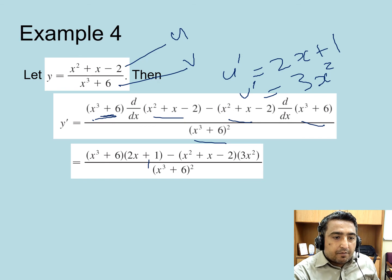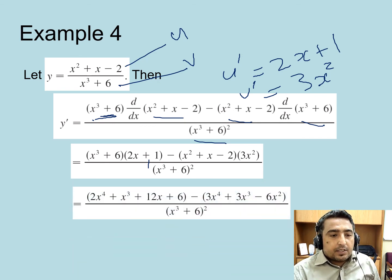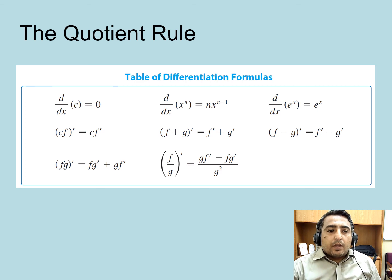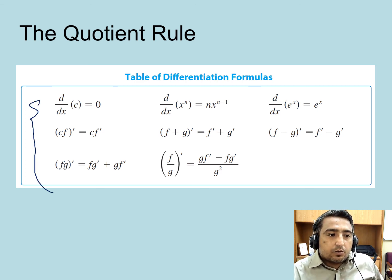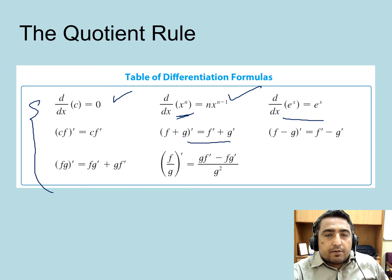After simplification, we end up with the final result. Till now, we have learned these formulas or rules: differentiation of a constant is zero, the power rule for x^n, differentiation of exponential functions, differentiation is distributive over addition and subtraction, the product rule, and the quotient rule.